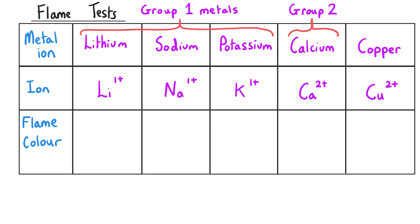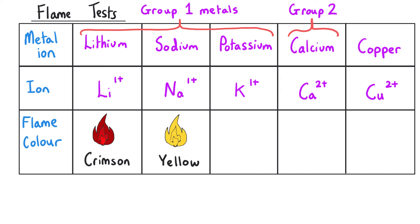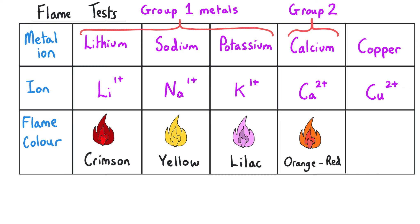The flame colour produced by each metal ion is distinctive and must be memorised. Lithium gives a crimson flame — a deep red colour. Sodium gives a yellow flame, sometimes appearing yellowy-orange, but yellow is the answer for the exam. Potassium gives a lilac flame, sometimes described as pink, but lilac is preferred. Calcium gives an orange-red flame, sometimes called brick red, but orange-red is what the specification requires. Copper gives a very distinctive green flame.